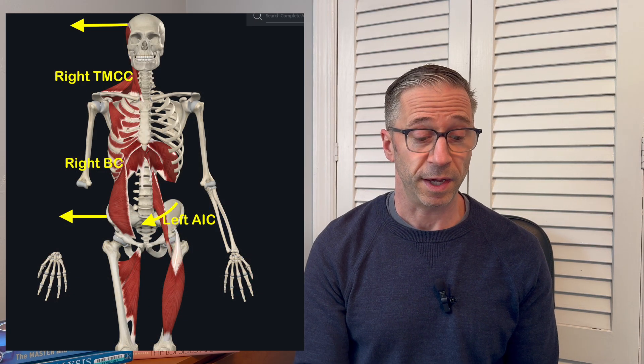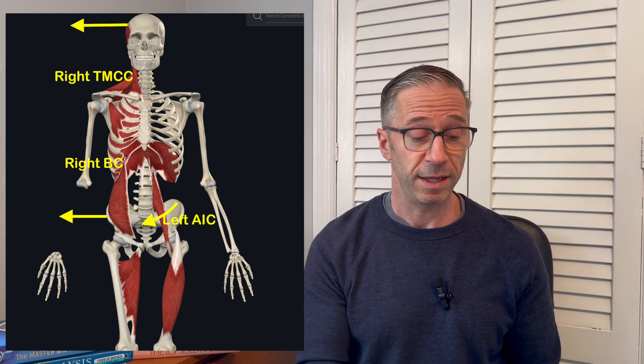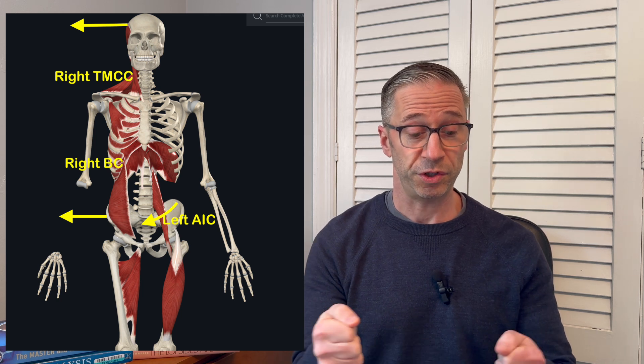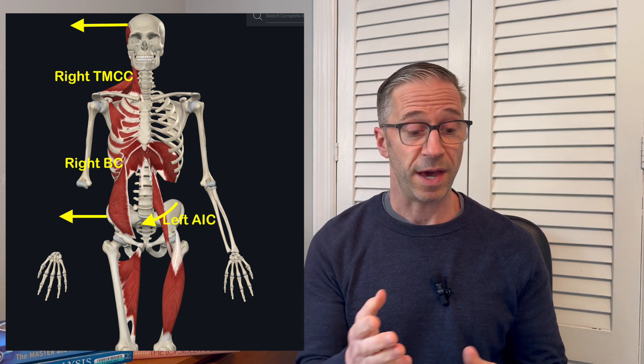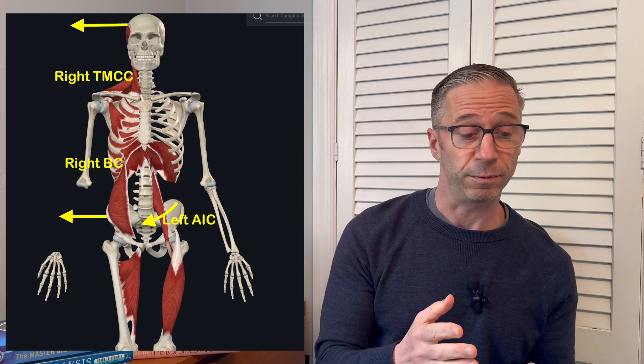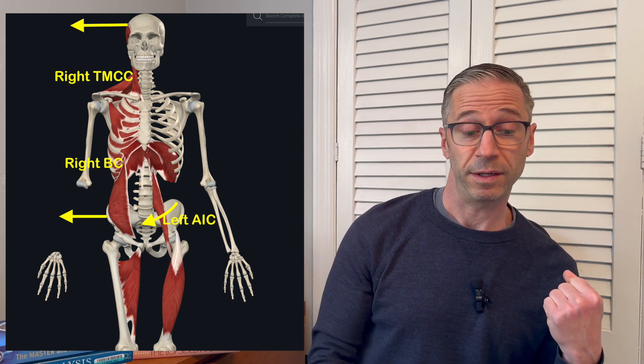Here it is with the other two patterns. On the bottom, the left AIC is bringing the pelvis to the right — the pelvis shifts to the right. The right BC pattern holds you over on the right. And then the right TMCC turns your head back to the left so you can stay straight.